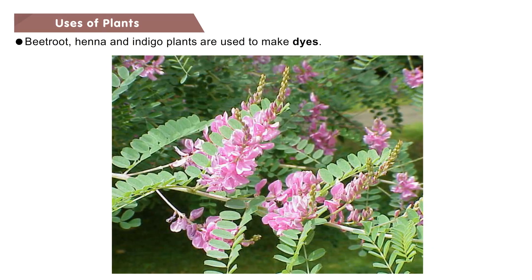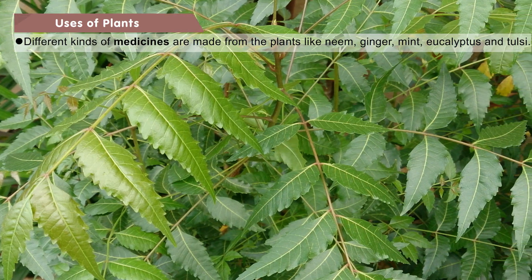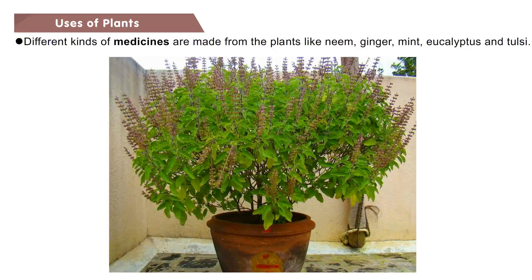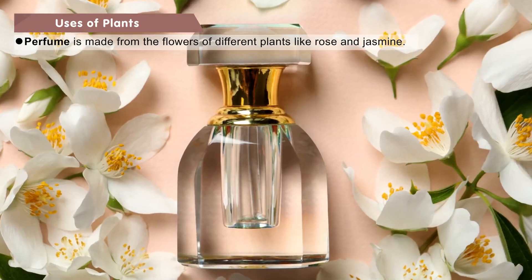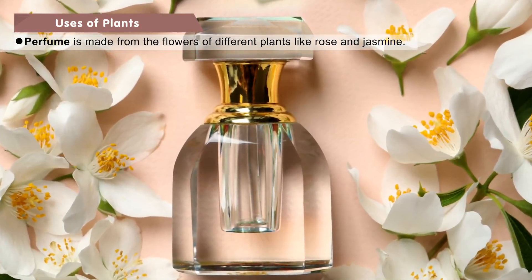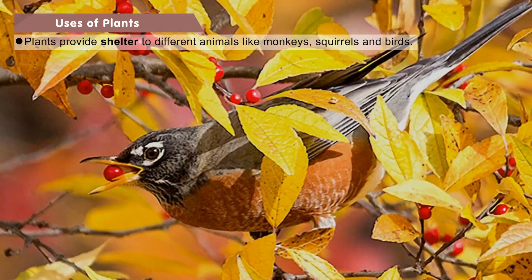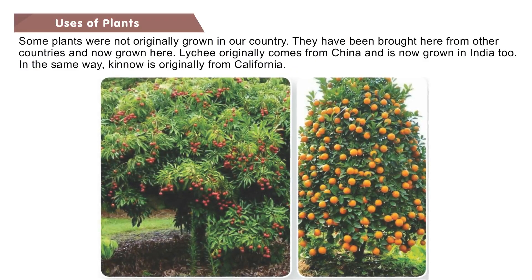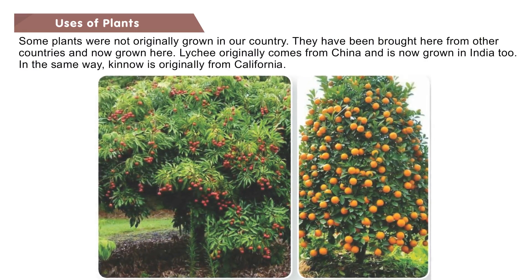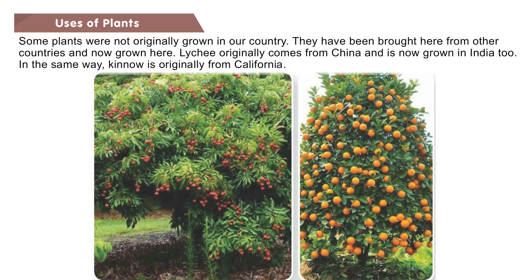Beetroot, henna and indigo plants are used to make dyes. Different kinds of medicines are made from plants like neem, ginger, mint, eucalyptus and tulsi. We get rubber from the bark of a rubber tree. Perfume is made from the flowers of different plants like rose and jasmine. Plants provide shelter to different animals like monkeys, squirrels and birds. Some plants were not originally grown in our country; lychee originally comes from China and is now grown in India too. Similarly, quinoa is originally from California.